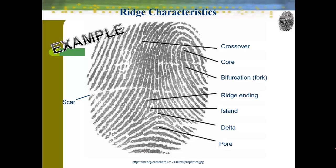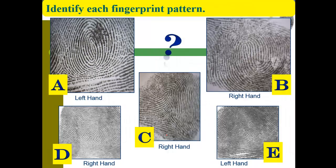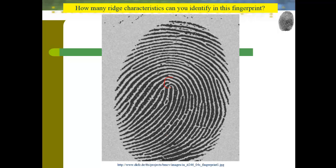Looking at the diagram, here are a few examples: a crossover ridge where one ridge crosses another; the core at the center; a fork — also known as a bifurcation — where a ridge splits into two. An ending ridge is where one ridge just stops. An island is a small isolated circle, just one part of a ridge by itself. The delta is the triangular part. Pores are where amino acids and oils are secreted, allowing your hands to actually leave fingerprints behind. When you look closely at a fingerprint, you can start identifying features like ending ridges and eyes.